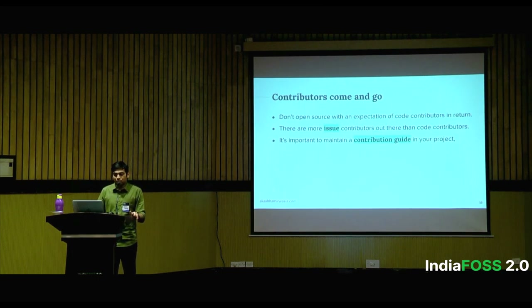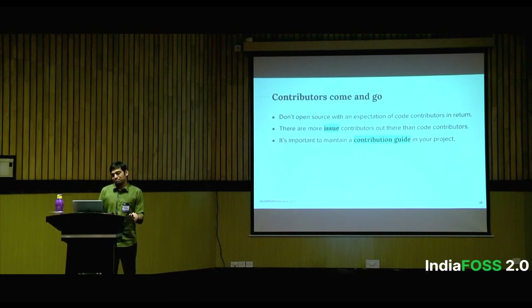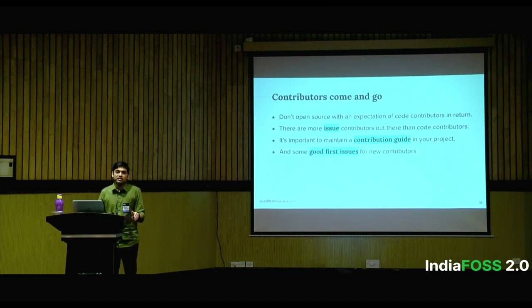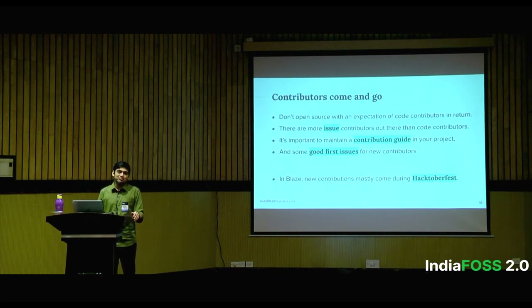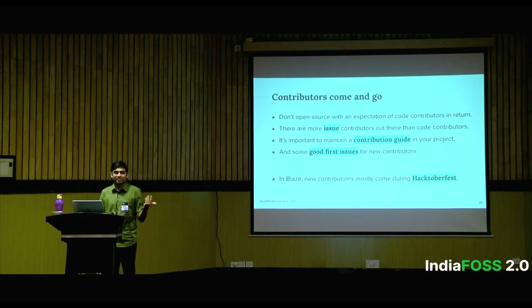Since contributors come and go, it's important to maintain a contribution guide in your project. If a new contributor comes and they're interested but can't find where to get started or how to set up the project, no one's going to come. Maintaining a nicely documented contribution guide that's always up to date is very important. It's also important to have good first issues — smaller, well-scoped issues that someone can take a hit at fixing. In Blaze, new contributions mostly come during Hacktoberfest, which is the open source month of the year where the most activities happen. Sometimes the goal is getting the free t-shirt and swag, but at least people are getting aware of open source.